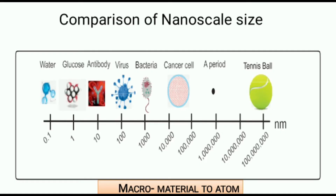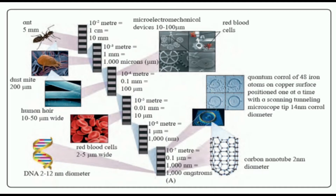For bacteria it is 1000 nanometers, so the rest are micron-size particles. You can see how small nanoparticles are. Some other examples: the size of human hair is 80,000 nanometers, size of red blood cells is 7,000 nanometers, diameter of a DNA molecule is 2 to 12 nanometers, the diameter of a carbon nanotube is 2 nanometers, and a single thickness of newspaper is 100,000 nanometers.